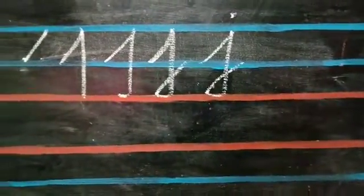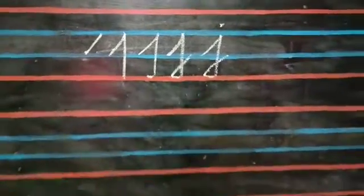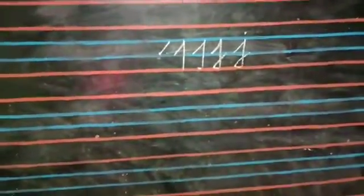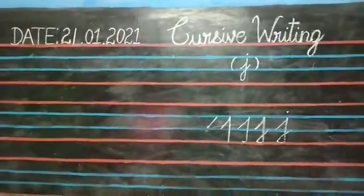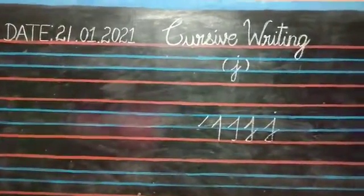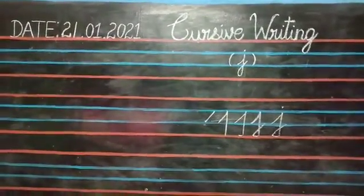Children, hope you all understood how to write cursive letter J. Now, open your English notebook. Write cursive letter J neatly. Thank you children.